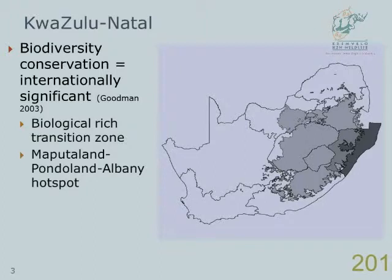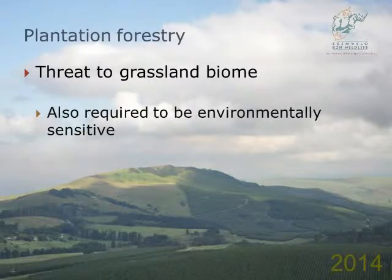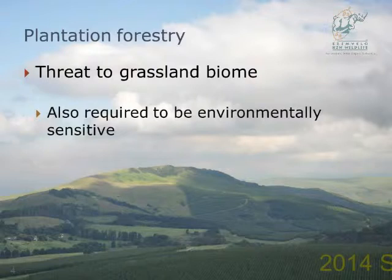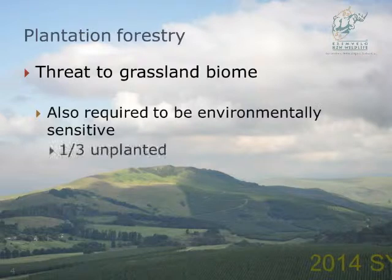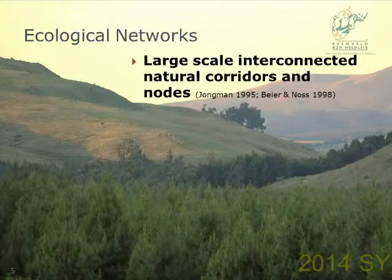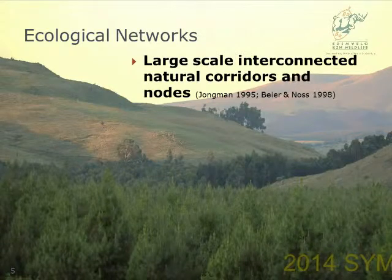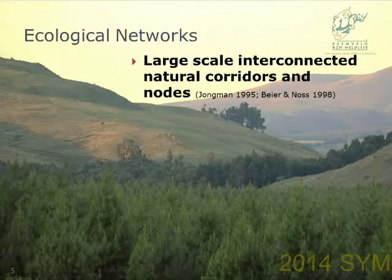Some parts fall within the Maputland and Albany biodiversity hotspots and constitute parts of the distribution of South Africa's threatened grassland biome. Plantation forestry is considered a key threat to this grassland biome, but as a commercial operation it's also required to be environmentally sensitive, and on average one-third of each plantation is left unplanted. These unplanted areas form large-scale interconnected natural corridors and nodes for organism movement on both evolutionary and ecological time scales, also referred to as ecological networks.